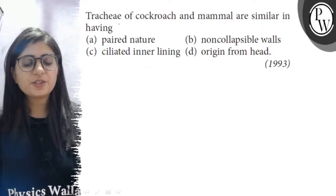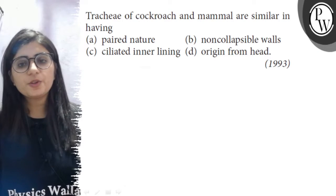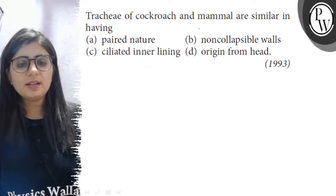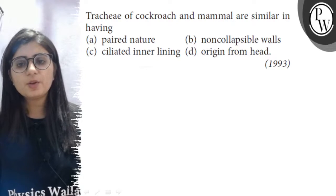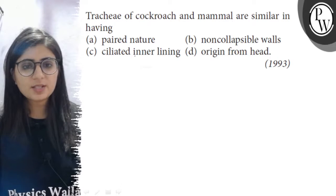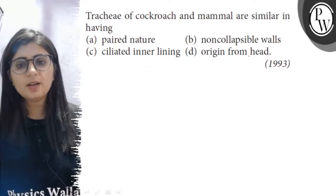Hello Bacho, let us see the question. Trachea of cockroach and mammals are similar in having: a) paired nature, b) non-collapsible walls, c) ciliated inner lining, and d) origin from head.